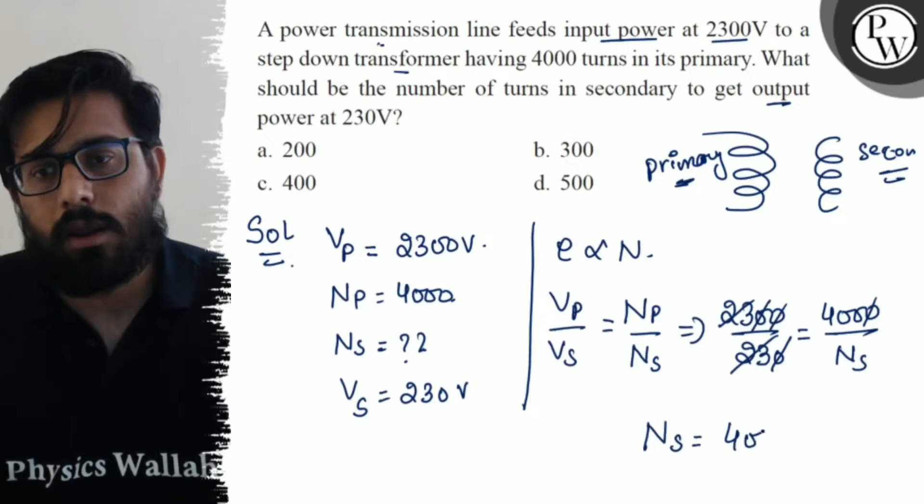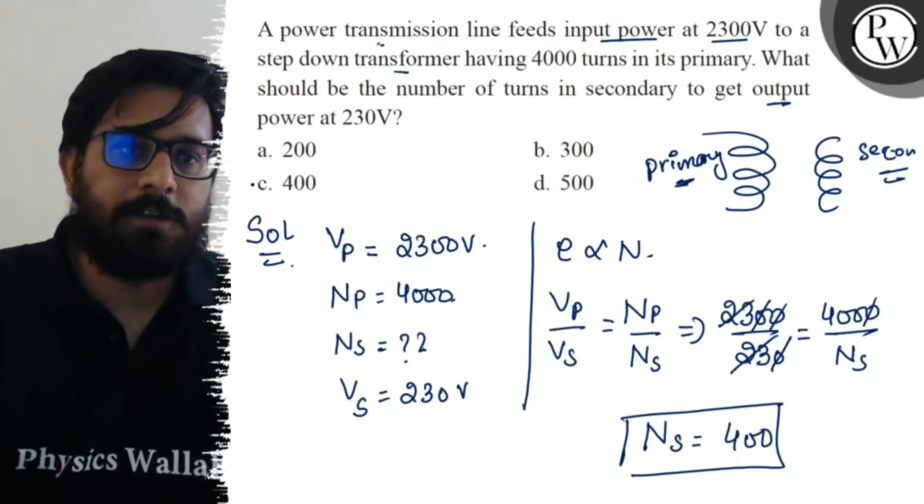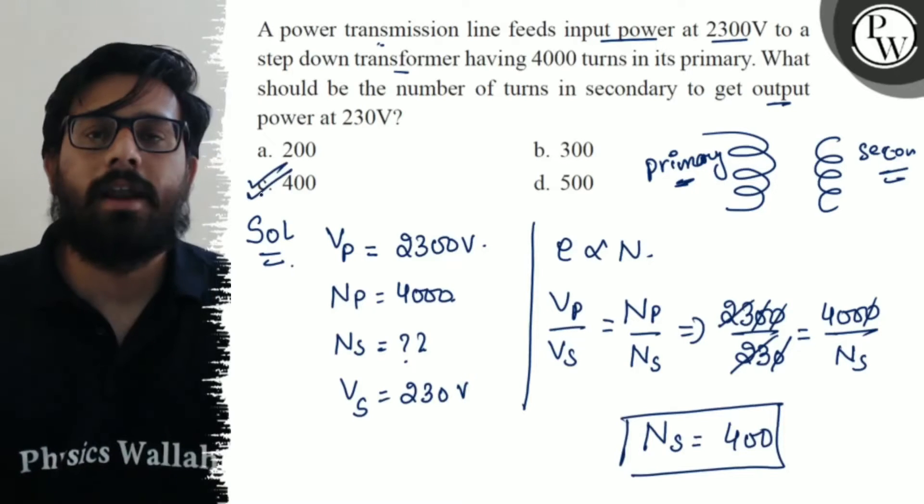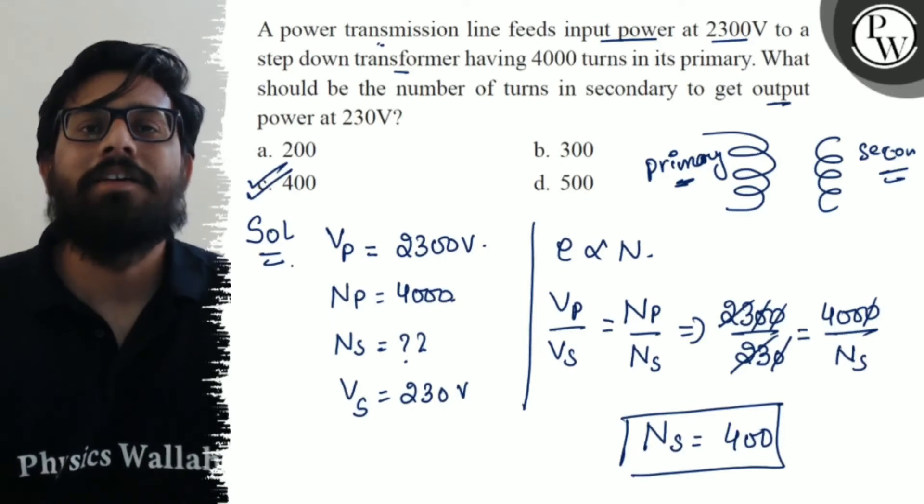The number of turns in the secondary comes out to be 400, which is option C. This is absolutely correct. I hope you got the concept of this question. All the very best.